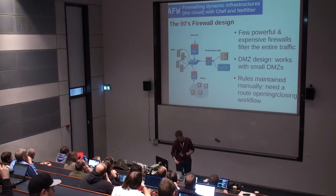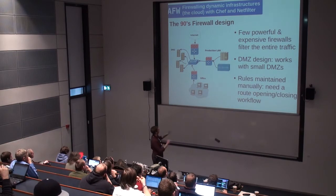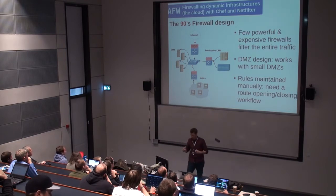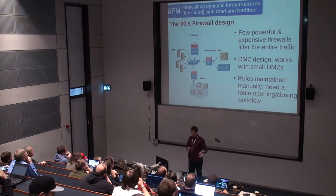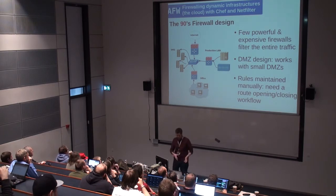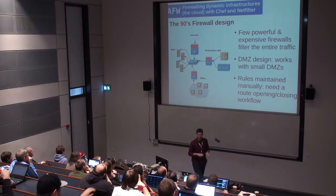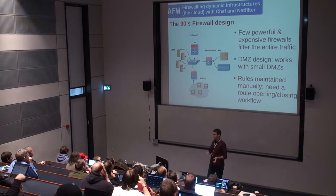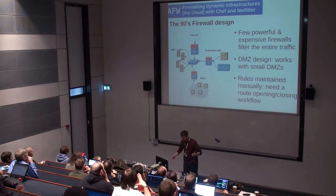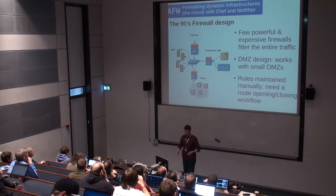In the 90s, we started building DMZs and put all the public servers in them. You'd have a few firewalls at the border of your DMZ protecting public servers, another firewall protecting your production LAN, another for your office network, etc. That works great, but it starts to become complicated for managing rules — opening and closing them. At that point there was pretty much no way to manage that centrally, so many firewalls had wide-open rules, like opening port 80 for the entire network.